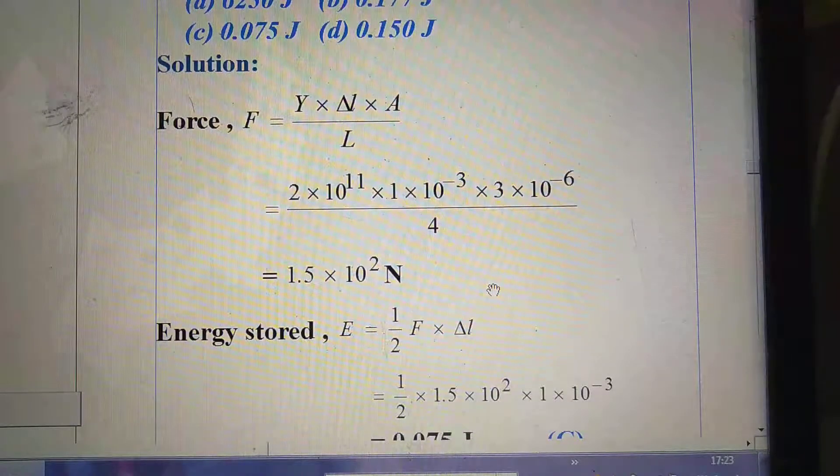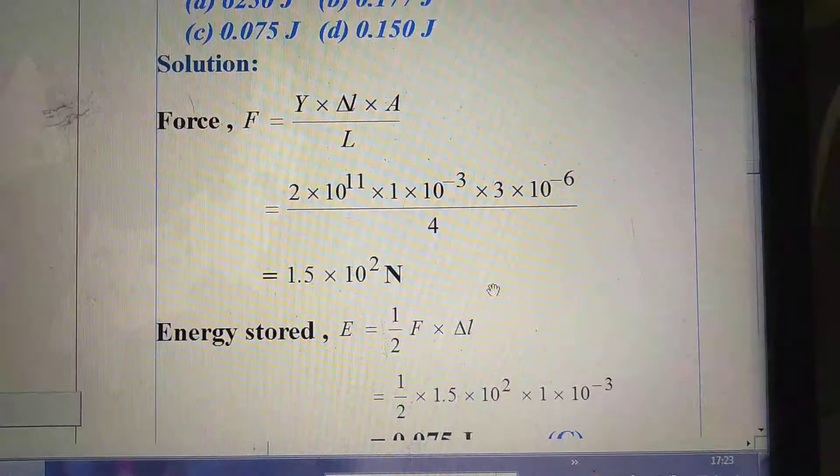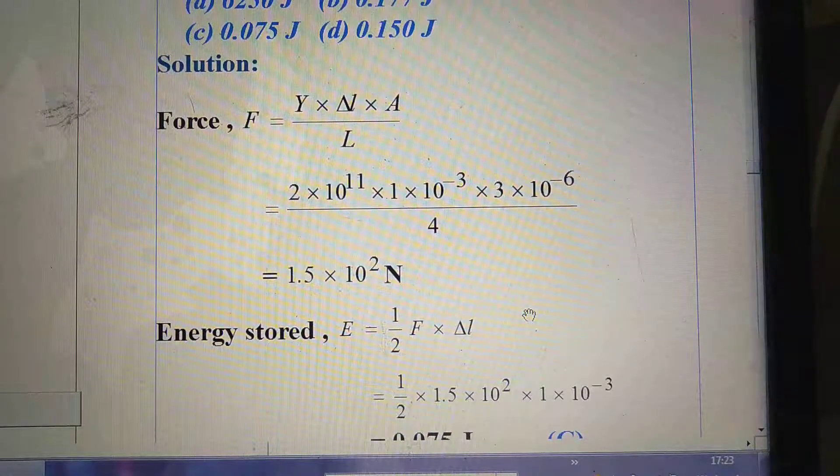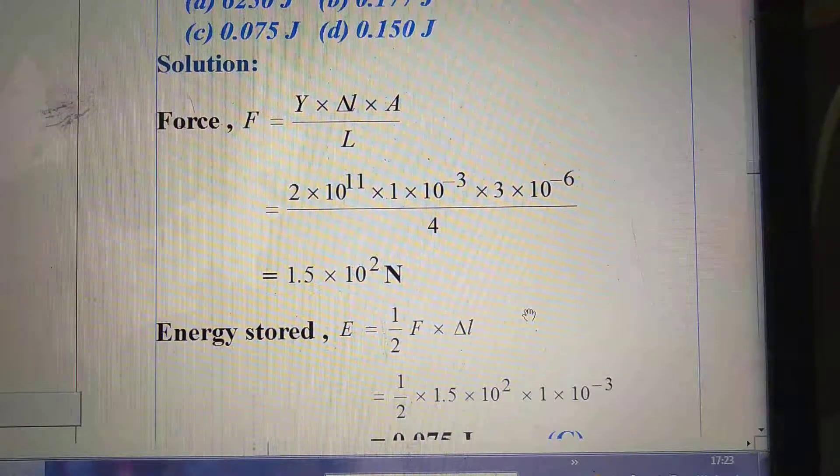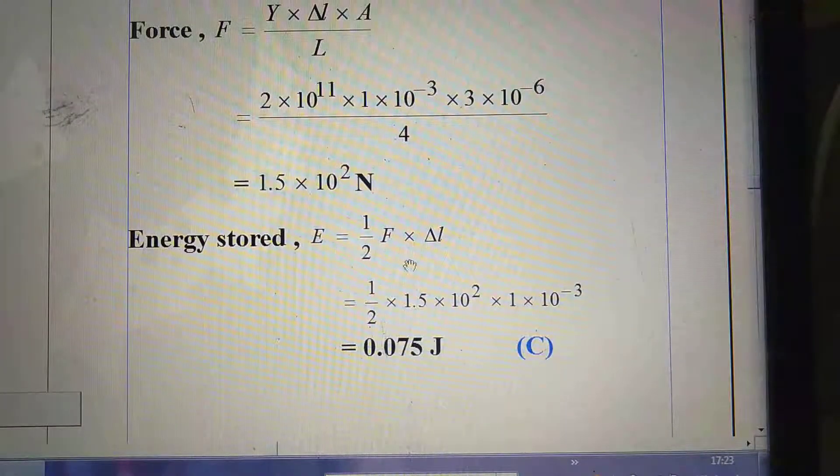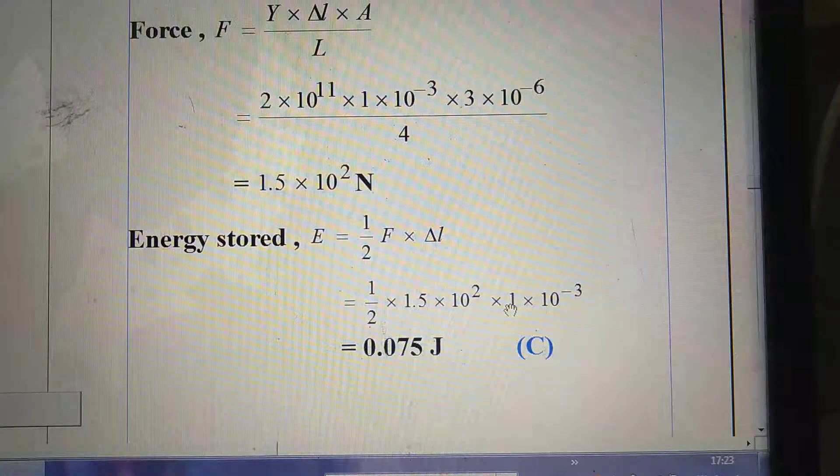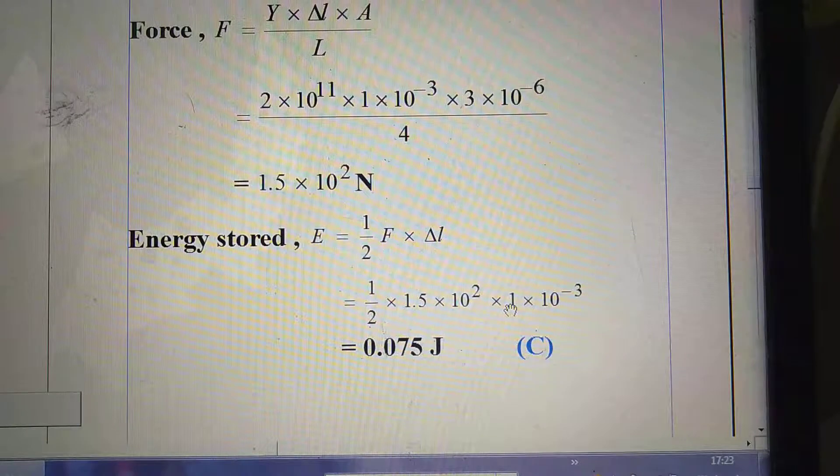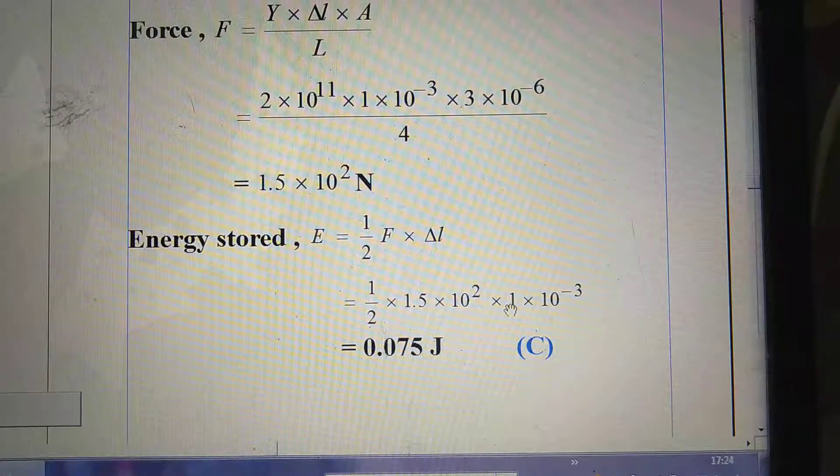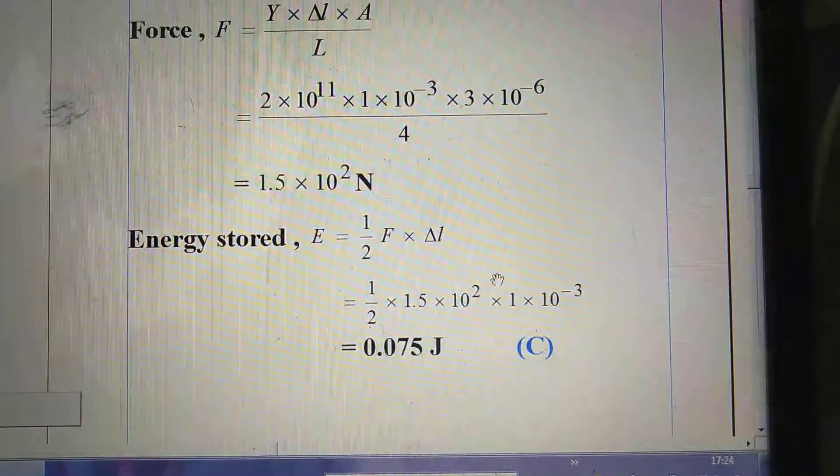So now as per question they ask to find out the energy. What is the formula of energy? E = ½ F × ΔL. F is the force, delta L is the change in length. We already calculated the value of force. So insert the value of force and change in length. After calculation we find out the result of energy as 0.075 joule. The right option is C, that is 0.075 joule.